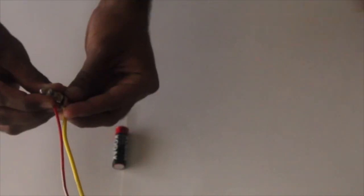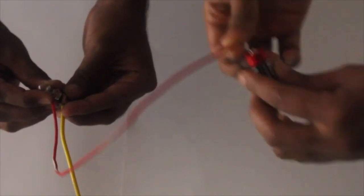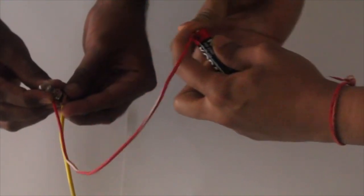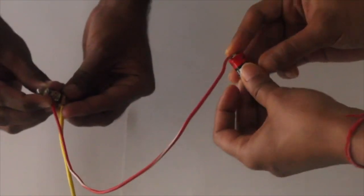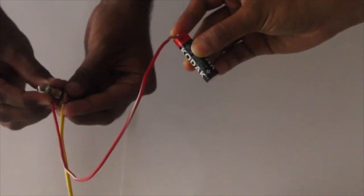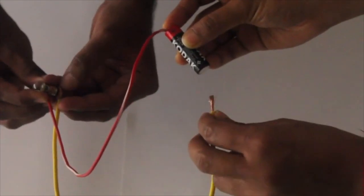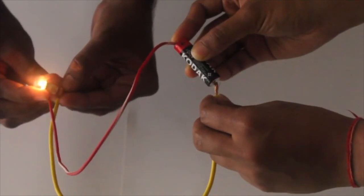Now, let us connect one exposed wire of the bulb to the positive terminal of the cell. Notice what happens when the other exposed wire of the bulb is connected to the negative terminal of the cell. The bulb glows.